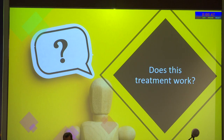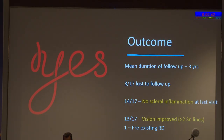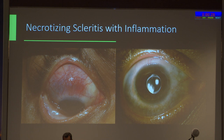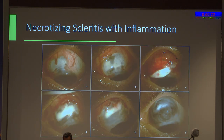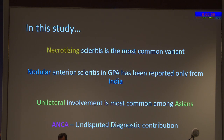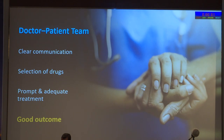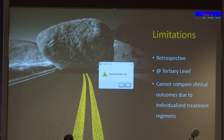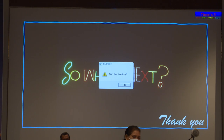Remission was followed by a maintenance phase of tapering steroids plus immunosuppressants. One patient developed pancytopenia secondary to cyclophosphamide and was switched to methotrexate. Two patients on cyclophosphamide needed rituximab to attain remission. Three scleral patch grafts were required for anatomical globe integrity. Mean follow-up was three years; three patients were lost to follow-up. The remaining 14 showed no scleral inflammation at last visit and 13 had vision improvement of more than two Snellen lines. In Q&A, it was noted the name changed from Wegener's due to its Nazi association.